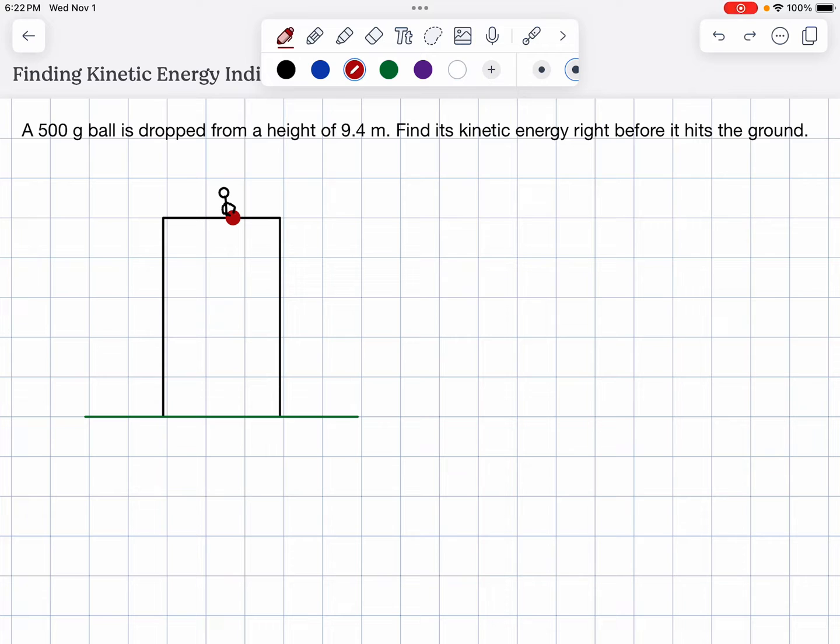To find the kinetic energy indirectly, we need to use energy conservation. So let's get right to the problem. A 500 gram ball is dropped from a height of 9.4 meters. Find its kinetic energy right before it hits the ground.